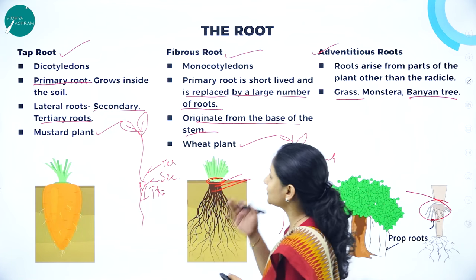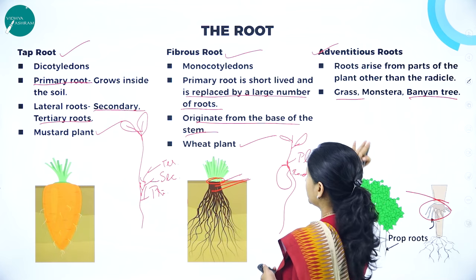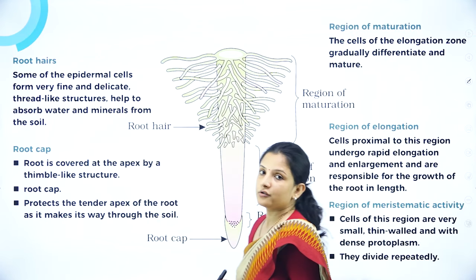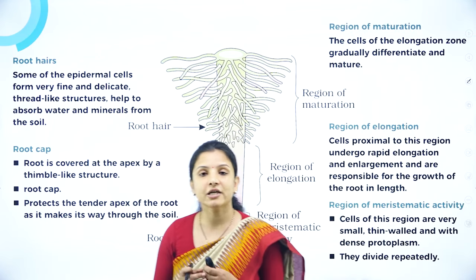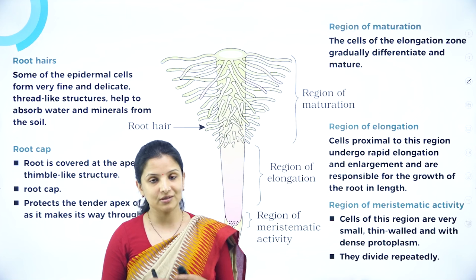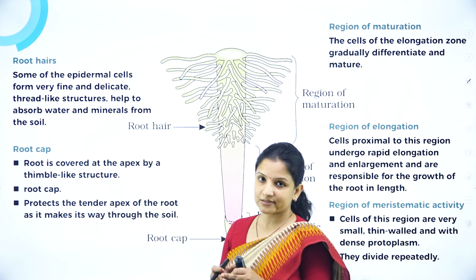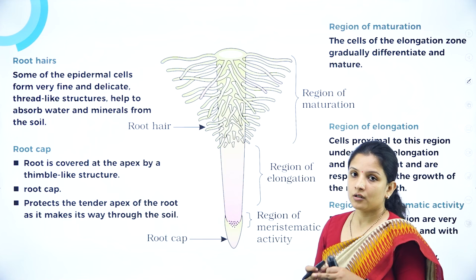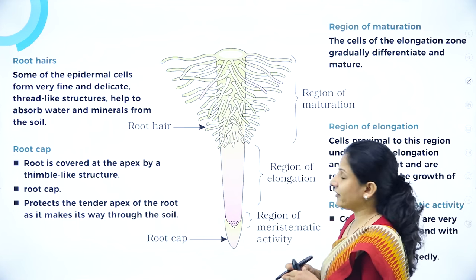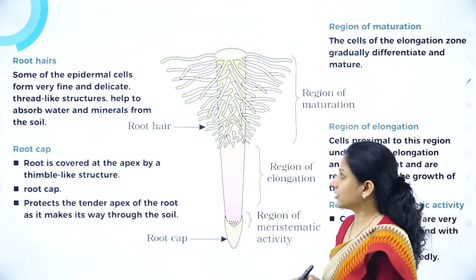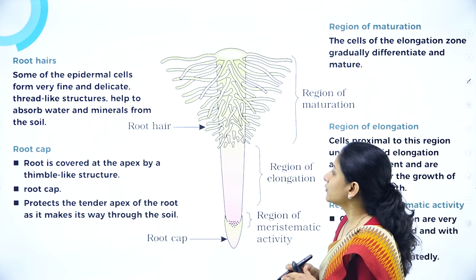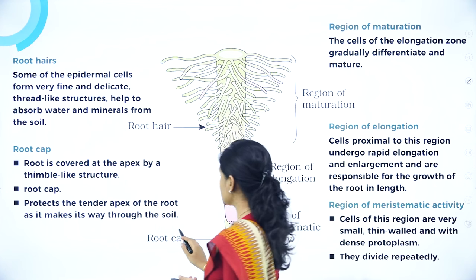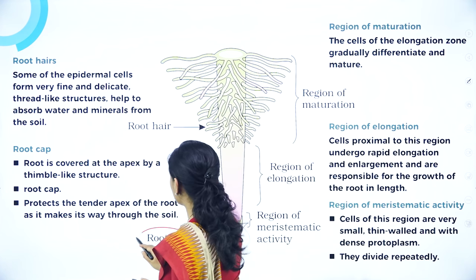Moving on to studying the regions of the root — this is an important question that can be asked in the exam for five marks along with a diagram. The root has different regions. The first region is the root cap.